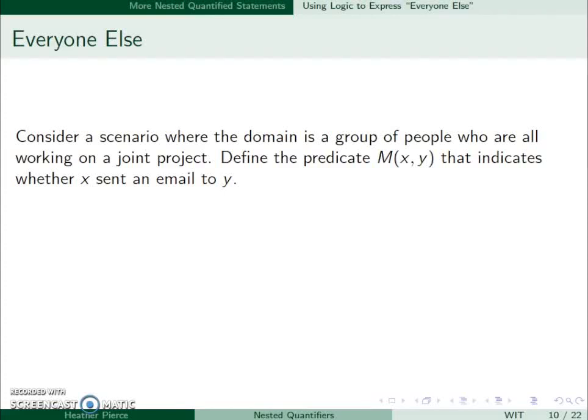Let's consider the scenario where we have a group of people working on a joint project. We'll keep M(x,y) what it was before. It indicates whether x sent an email to y.